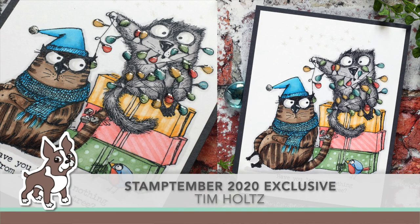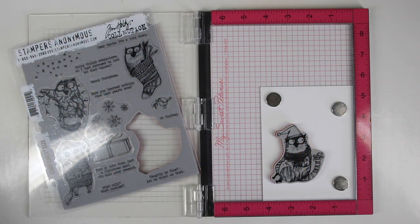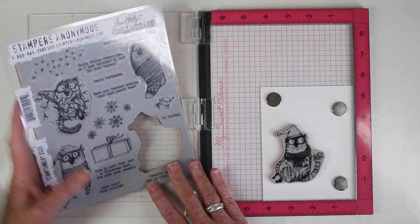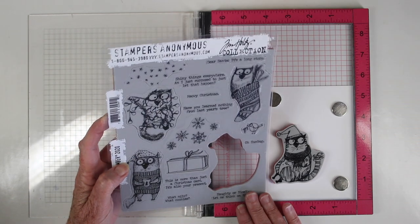Welcome everyone, it's Sherri Curl for Simon Says Stamp and I have the Stamptember 2020 exclusive from Tim Holtz. This stamp set is really fun. It has all of these cats with these really expressive faces. One is kind of angry looking at another or looking at the message that you put down.